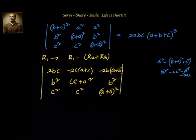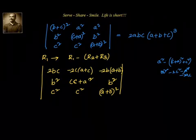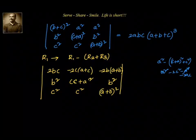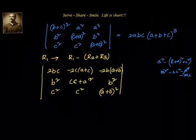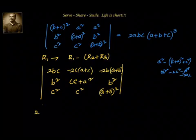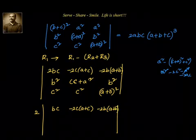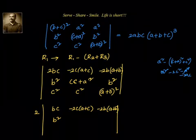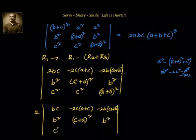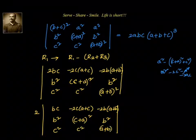First thing: we can take the factor 2 out. After that we will apply R2 assigned as R2 minus something times R1, and similarly R3 assigned as R3 minus something times R1, to make the first column's second and third elements zero. So taking 2 out, the first row becomes: bc, minus c(a+c), minus b(a+b). Then we have b², (c+a)², b², c², c², (a+b)².